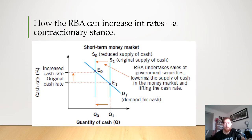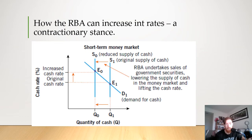Looking at the supply-demand type diagram: when the RBA wants the cash rate to increase for a contractionary stance, they sell government securities at a discounted rate, which leads people to buy them. That causes a shift to the left in the quantity of cash available, which drives up the cash rate because there is a lower supply of money overall.